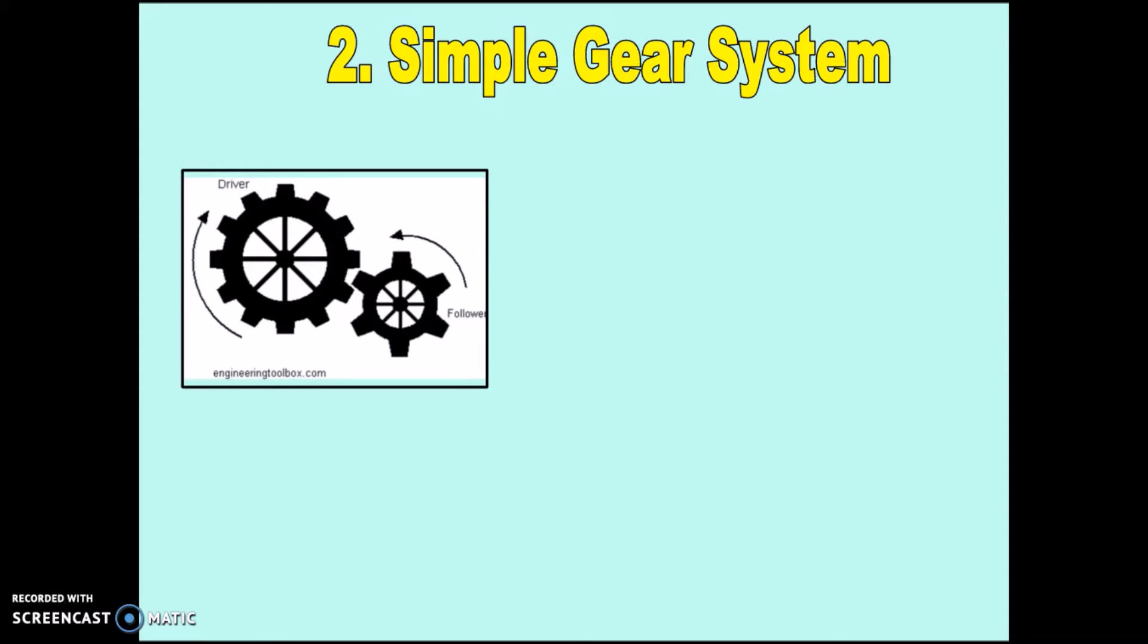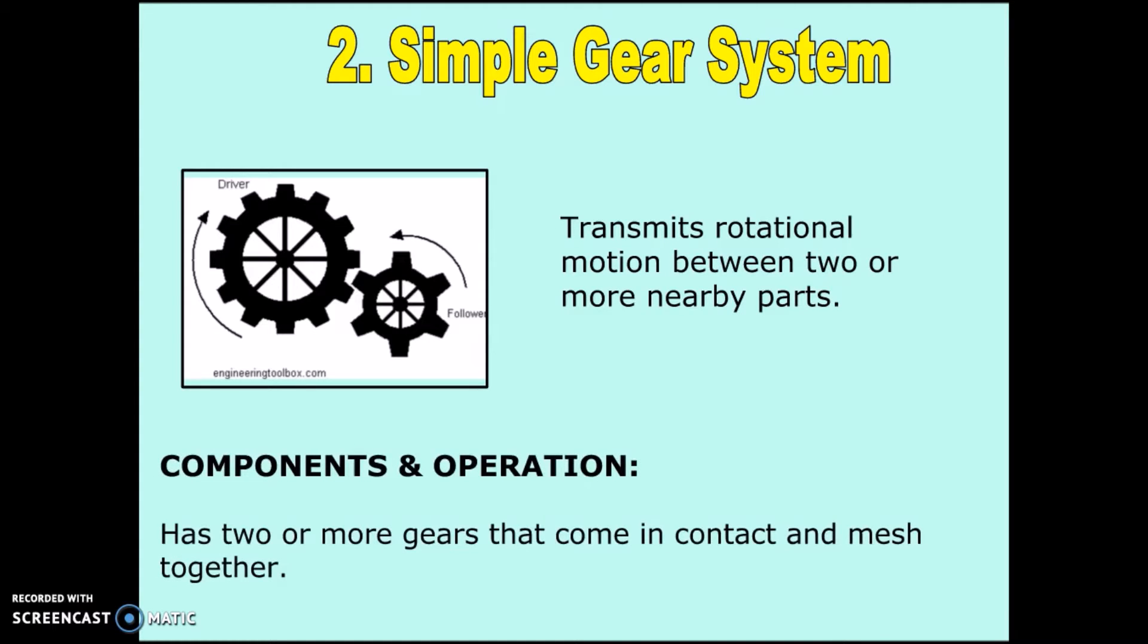In a simple gear system, you also have two or more gears that come in contact and mesh together. It looks a little bit like the friction gear system, but with one very important difference. A simple gear system has something called teeth.